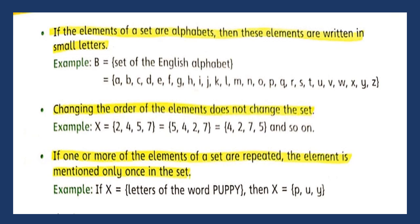Changing the order of elements does not change the set. Agar hum kisi element ka order change karay, usse set change nahi hoga. For example, set X has {2, 4, 5, 7} — we can change the order and it remains the same set. If one or more of the elements of a set are repeated, the element is mentioned only once in a set. Set ke elements repeat nahi honge. If X has letters of the word 'puppy', then X has elements p, u, y only.